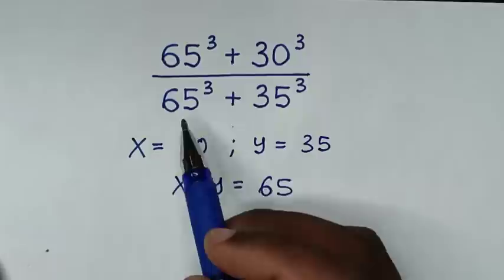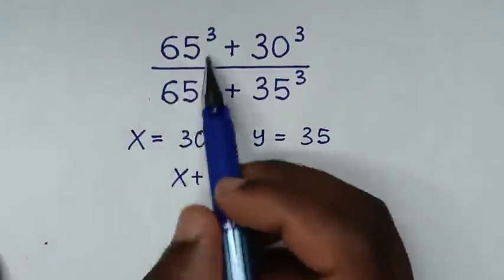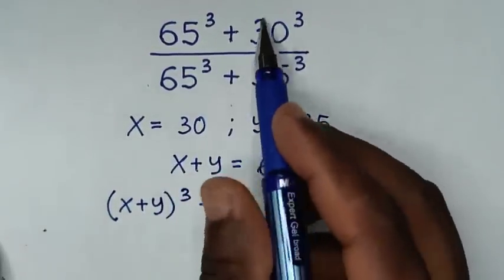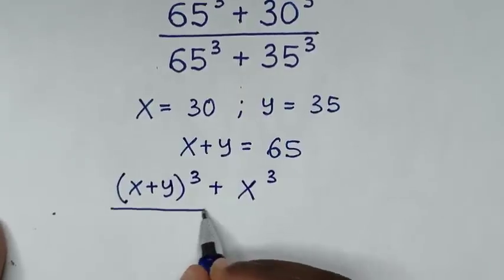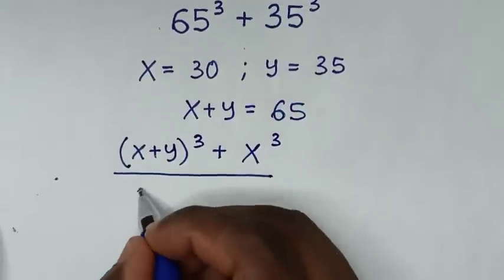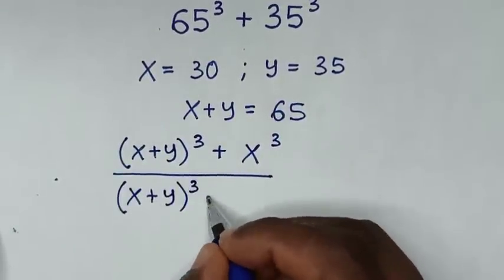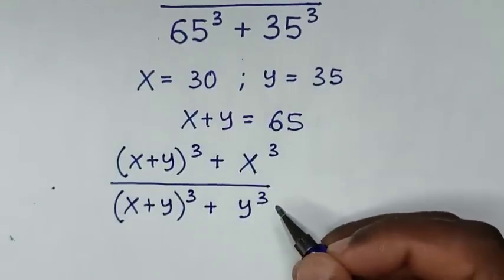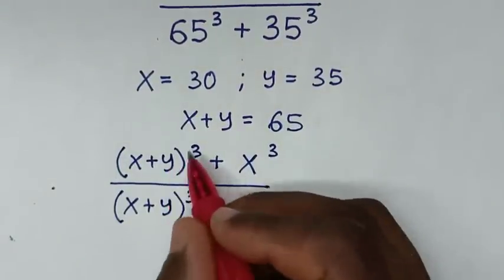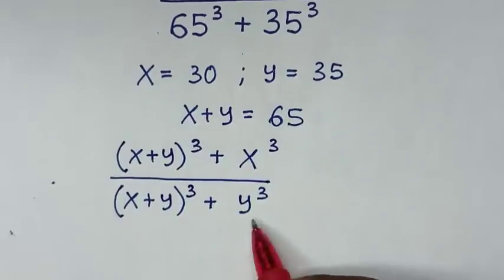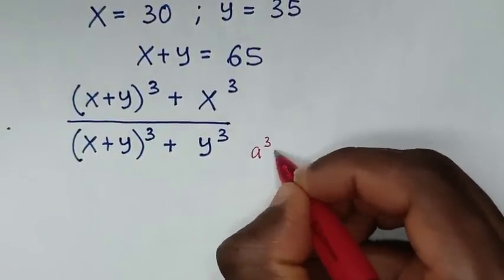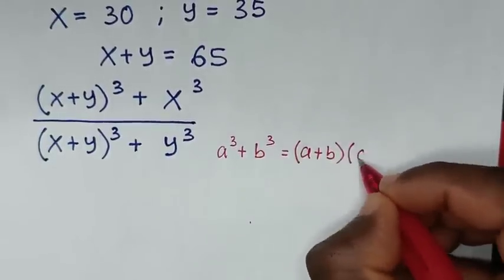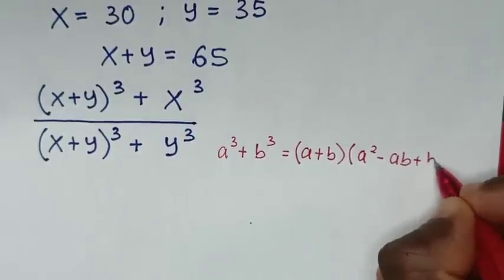Therefore this will relate as x plus y in both places. Then it will be (x plus y) power 3 plus x power 3 over (x plus y) power 3 plus y power 3. From here, this is in the form of a power 3 plus b power 3 which is equal to (a plus b)(a squared minus ab plus b squared).